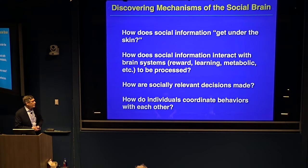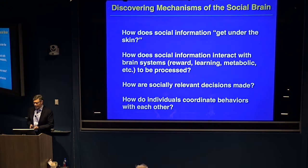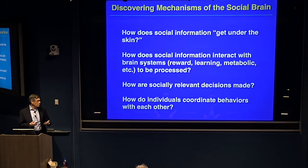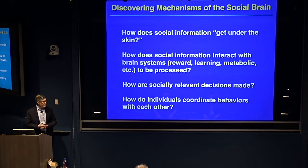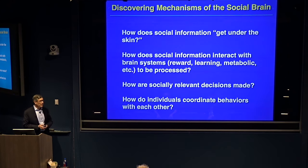When we're talking about discovering mechanisms of the social brain, it leads to some questions many of us are familiar with already, and the Simons Foundation is dedicating itself to understanding these. How does social information get under the skin? That is, how does environmental information get into effect biology? How does social information interact with brain systems — reward system, learning and memory — to actually be processed and integrated? How are socially relevant decisions made, and how do individuals coordinate their activities to make possible advanced social life?